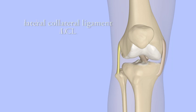The lateral collateral ligament, or LCL, is found on the lateral, or outside, of the knee. It keeps the knee from bending too far inward.